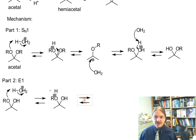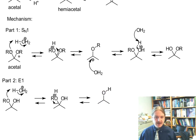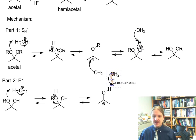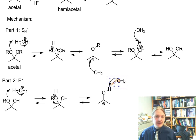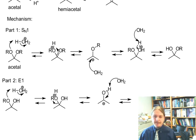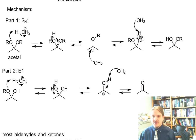This is an E1 elimination, so now we get loss of the leaving group — the leaving group is leaving. This generates another carbocation. With E1, the second part is a proton transfer, and we're going to use water as our base because, again, there's lots of it. We get proton transfer and formation of the carbon-oxygen pi bond, giving us our ketone.